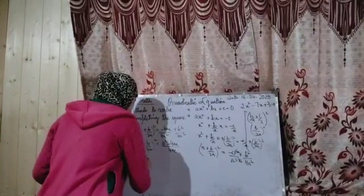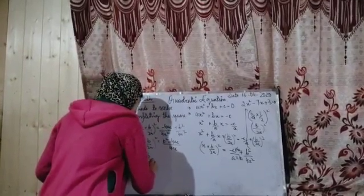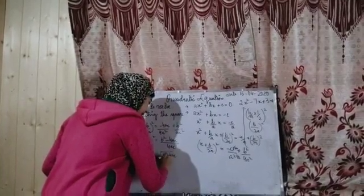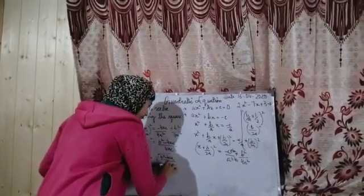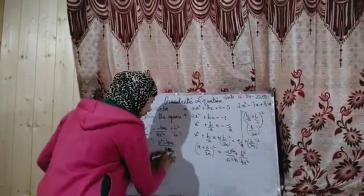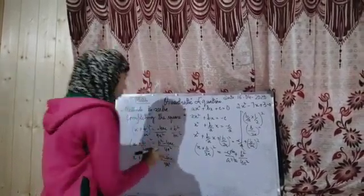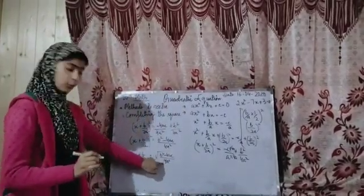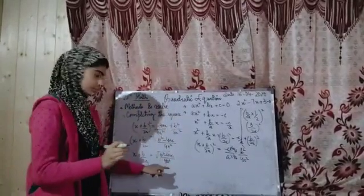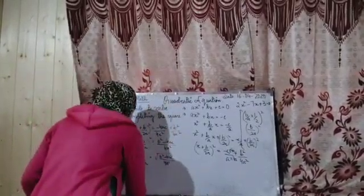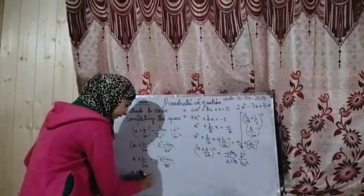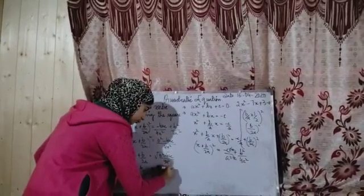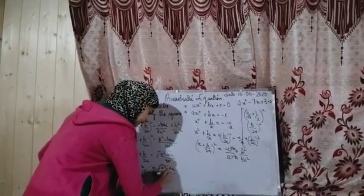Taking the square root of both sides: x + b/2a = ±√(b² - 4ac) / √(4a²). Since 4 is a perfect square of 2 and a² is also a perfect square, the denominator simplifies to 2a. So x + b/2a = ±√(b² - 4ac) / 2a.